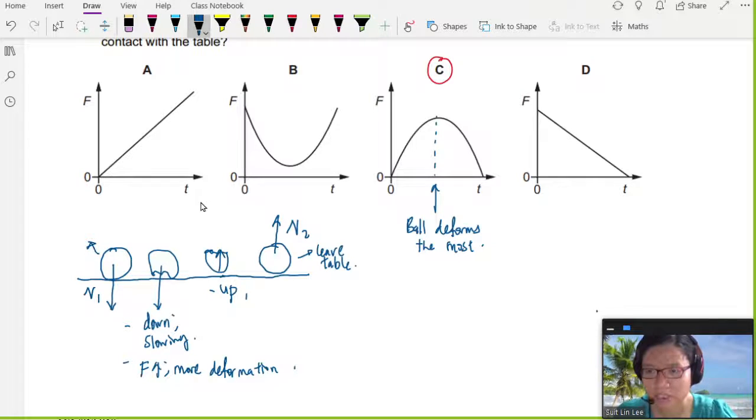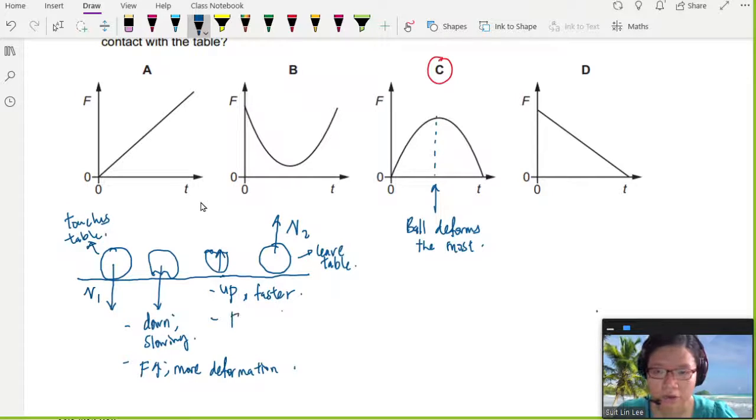This point is where it touches the table. Alright, so when it's going up, it is traveling faster and faster. So moving faster, the force begins to decrease because the ball is returning to its original shape, or getting less deformed. Original shape.